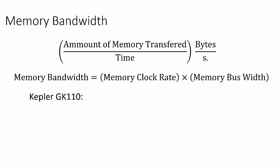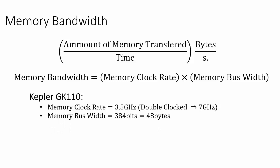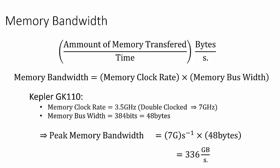For Titan's Kepler GK 110 GPU architecture, we have a memory clock rate of 3.5 gigahertz, which is double-clocked, so we get an effective memory clock rate of 7 gigahertz. And we have a memory bus width of 384 bits, which is equivalent to 48 bytes. Taking the product of these two quantities, we see that our theoretical memory bandwidth is 336 gigabytes per second.